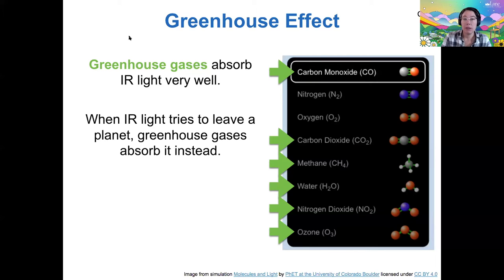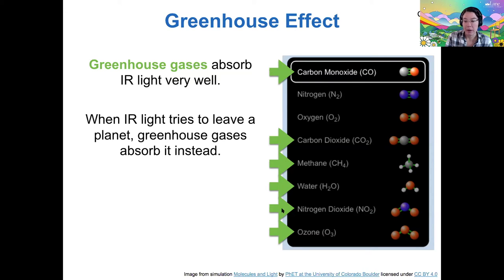The greenhouse effect — just as an overview — greenhouse gases are gases that tend to absorb infrared light really well. So when infrared light tries to leave a planet, the greenhouse gases absorb it instead. Lots of different gases can act as greenhouse gases: carbon monoxide, carbon dioxide, methane, water vapor, nitrogen dioxide, and ozone can all act as greenhouse gases. Oxygen gas and nitrogen gas do not.